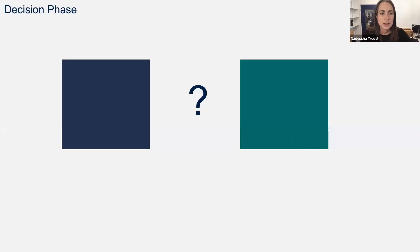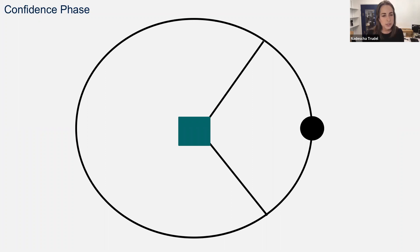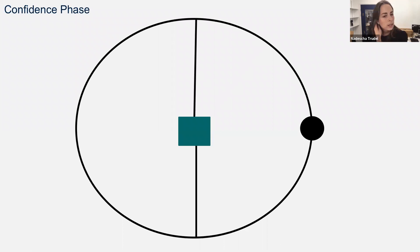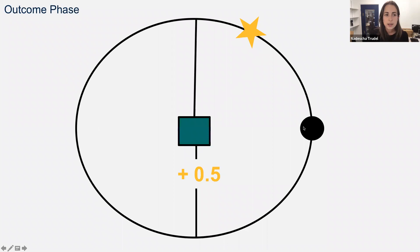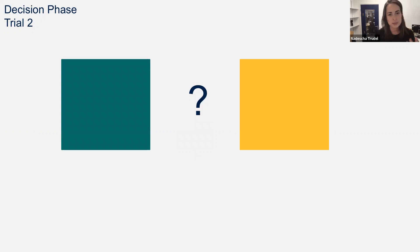In the decision phase, participants can choose between both predictors. In this case, they chose the green predictor. Then they enter the confidence phase — they see the selected predictor in the middle, the predictor's estimate as a black dot, and the interval. If they've never chosen the green predictor before, they should open up the interval. Once they lock their choice, they see the true target location and can learn how well the predictor performed by observing the angular error — the distance between target and predictor's estimate — and the points gained, which are 0.5, equaling 50% of the circle, determined by the confidence interval.